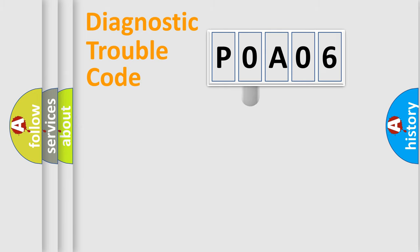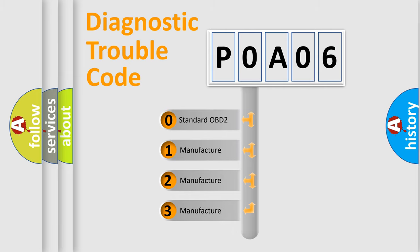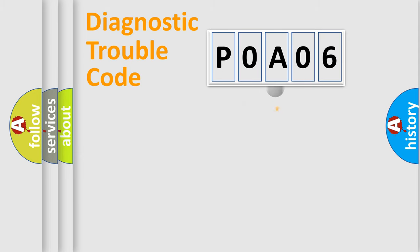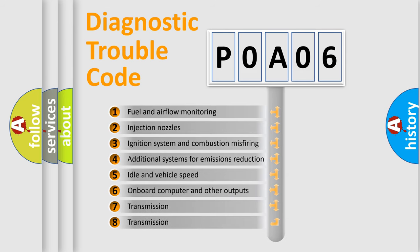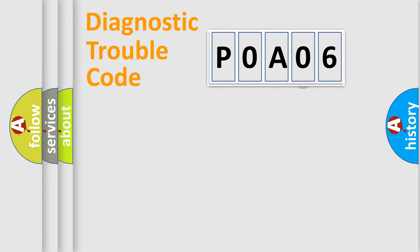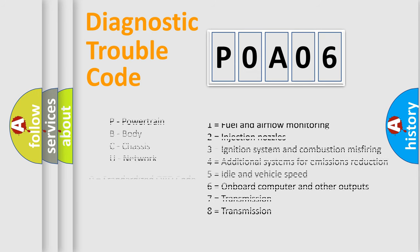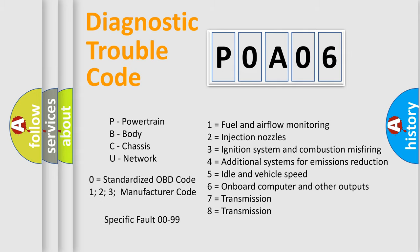This distribution is defined in the first character of the code. If the second character is expressed as zero, it is a standardized error. In the case of numbers 1, 2, or 3, it is a manufacturer-specific error. The third character specifies a subset of errors. This distribution is valid only for the standardized DTC code. Only the last two characters define the specific fault of the group, and this division is valid only when the second character is zero.